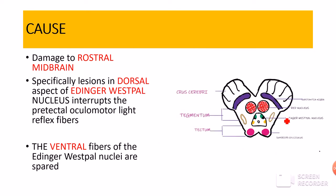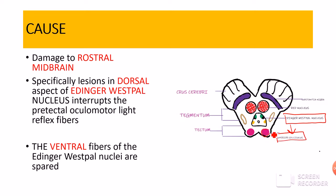From the diagram, the Edinger-Westphal nucleus is shown here. Dorsal or rostral to the Edinger-Westphal nucleus is the superior colliculus, which contains the pretectal nucleus. So the pretectal nucleus sends fibers to both the Edinger-Westphal nuclei — these are called the internuntial neurons — and a defect in these internuntial neurons or the relay system gives rise to the Argyle Robertson pupil.